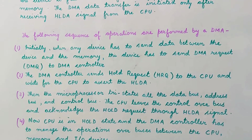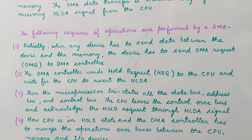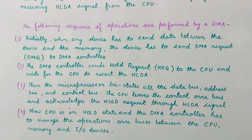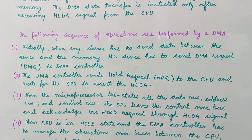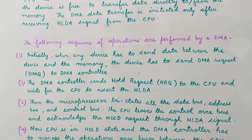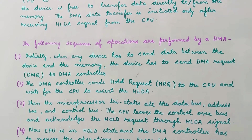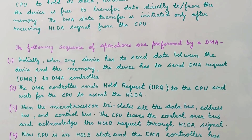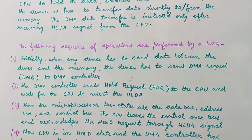The DMA controller will send a hold request to the CPU by making the hold signal high. The CPU, after completing its current execution, will send an acknowledgement signal — the HLDA signal — to the DMA controller. Once the DMA controller receives the HLDA signal, it will take control over the system bus. All three buses will be controlled by the DMA controller and data transfer will start directly between the memory and input/output without any involvement of the CPU.